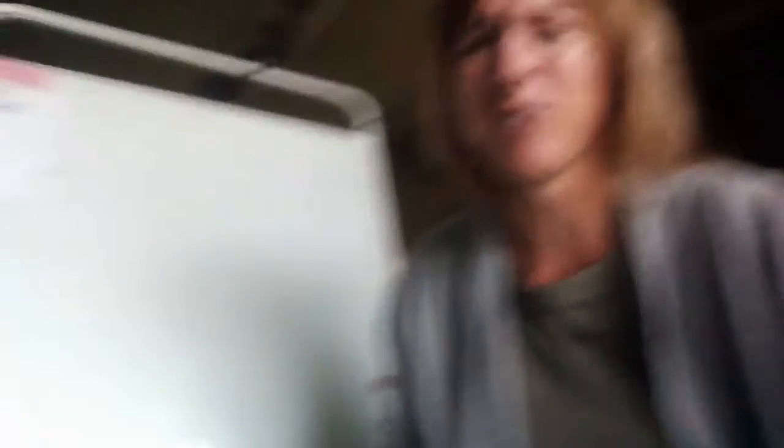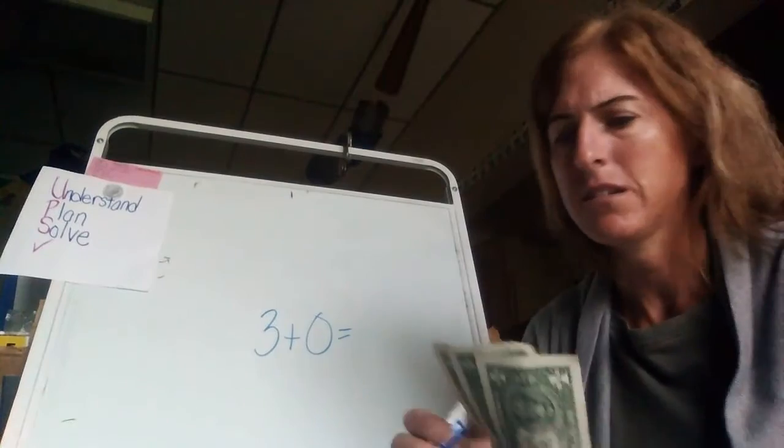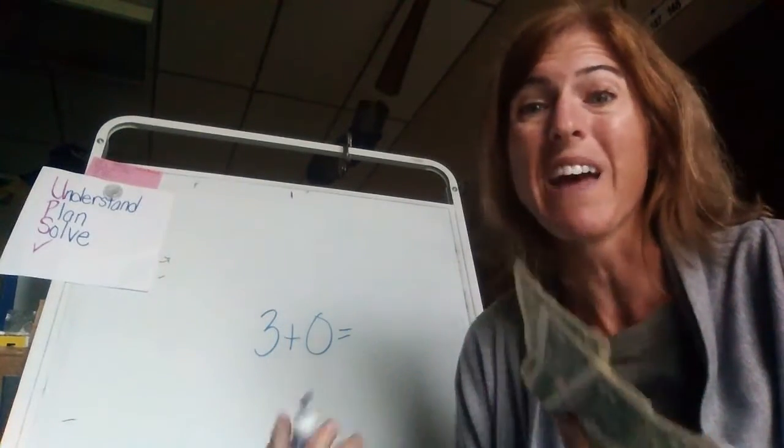All right, so I have three dollars. Three dollars and I need five to get to my slime kit. So last night I didn't lose any teeth and that means I didn't get any money from the Tooth Fairy. I have three and nothing else. Three plus zero. How much do I have right now? Let's figure that one out. Three plus zero. One, two, three. That's right. I have three dollars.